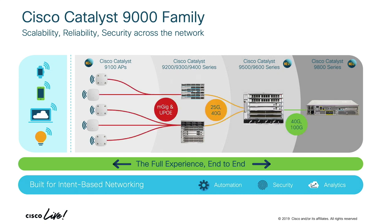Building out the speeds: 802.11ax requires more uplink bandwidth, so I need more 25 Gig or 40 Gig, and then more 100 Gigabit Ethernet as well. It's a very powerful picture.